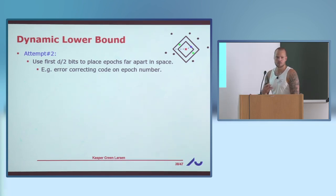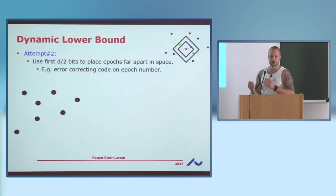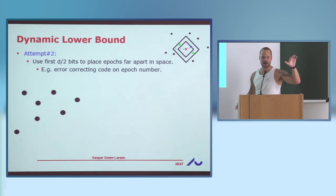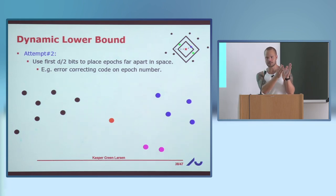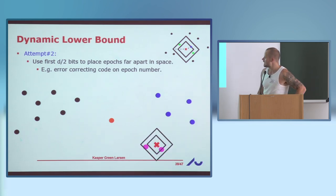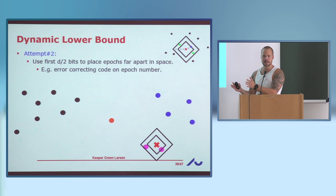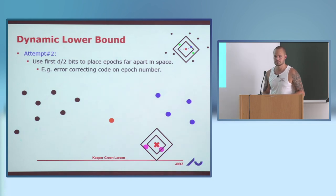A second attempt: the problem was that the black and blue points were all on top of each other. So let's spread them out — put them in different parts of space. Allocate the first D/2 bits to encode the epoch number using an error-correcting code, so all black points are somewhere in space, all blue points somewhere else, all purple ones elsewhere. The first half is something fixed depending on the epoch number and the second half is uniform random bits. Now I can make queries corresponding to the hard static distribution for, say, the purple ones — I just take the purple prefix and then make the query on the remaining D/2 bits.